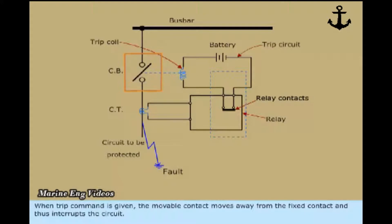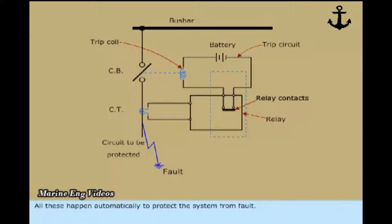When trip command is given, the movable contact moves away from the fixed contact and thus interrupts the circuit. All these happen automatically to protect the system from fault.